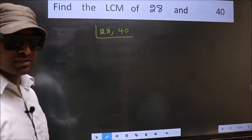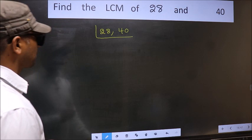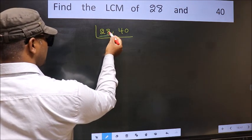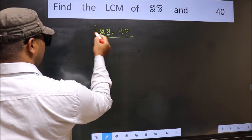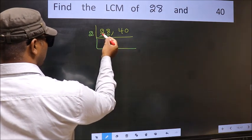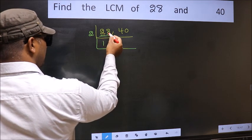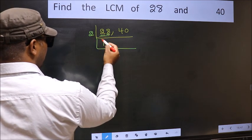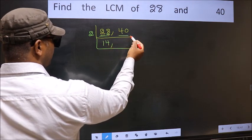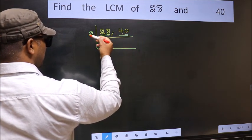Now focus on the first number, which is 28. The last digit is 8, which is even, so take 2. In the 2 table, 2 times 1 is 2 and 2 times 4 is 8, so 28 divided by 2 gives 14. For the other number 40, the last digit is 0, so it is divisible by 2.